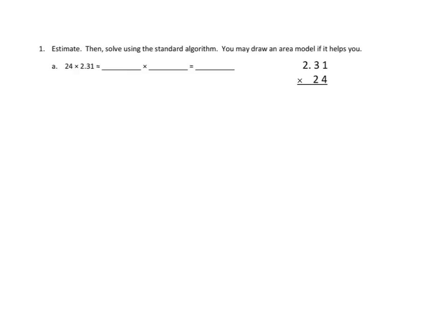Problem number one, directions are pretty simple. Estimate, we've done that before, then solve using the standard algorithm. You may draw an area model if it helps you. So let's first estimate. We're going to look at our first number, 24. The largest place value is the tens. Is this closer to two tens or three tens? I think it's closer to two tens because it's 24, not 25. So I'm going to say that that's roughly 20.